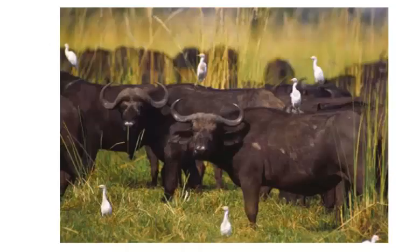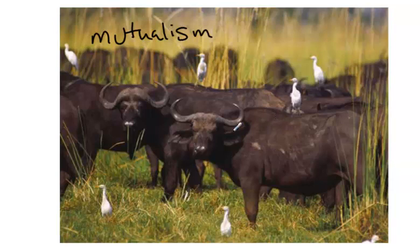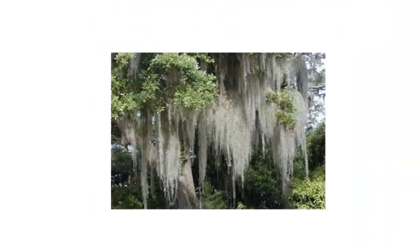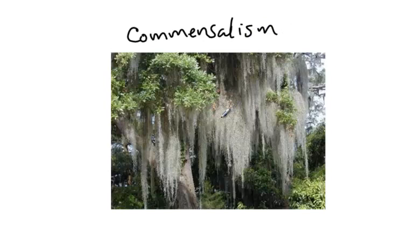This is mutualism — when both species are benefited. These birds eat the parasites off of the cattle, so the birds get food and the cattle get their parasites removed. Both are benefited in a mutualistic relationship. And finally we have commensalism, where one species is benefited while the other has no impact. The Spanish moss is given a place to live on the tree, but the tree suffers no help or harm from the Spanish moss growing on it. So: one helped, one unaffected.